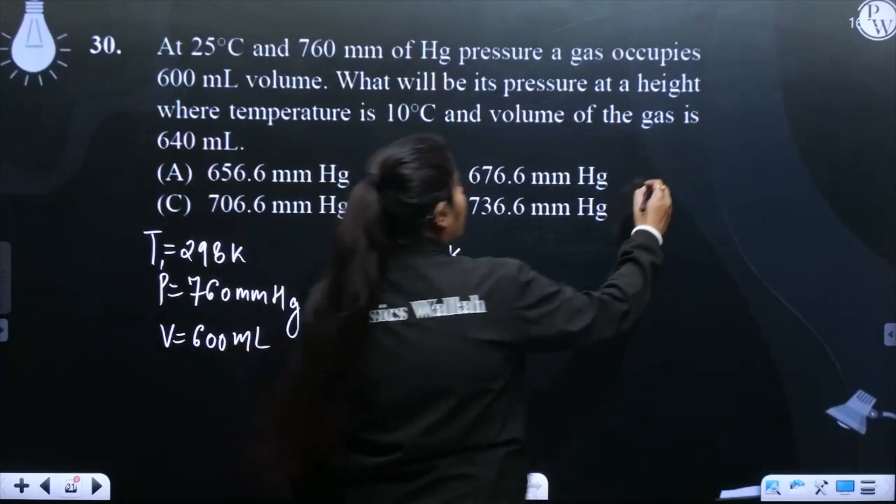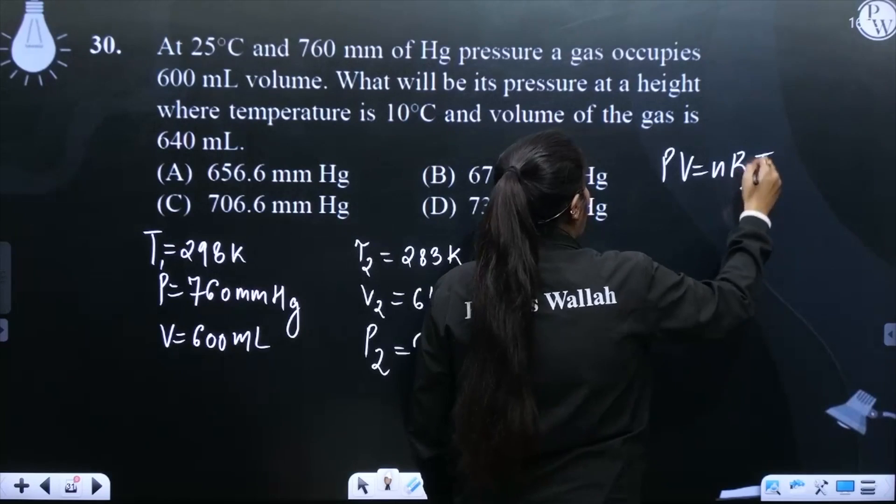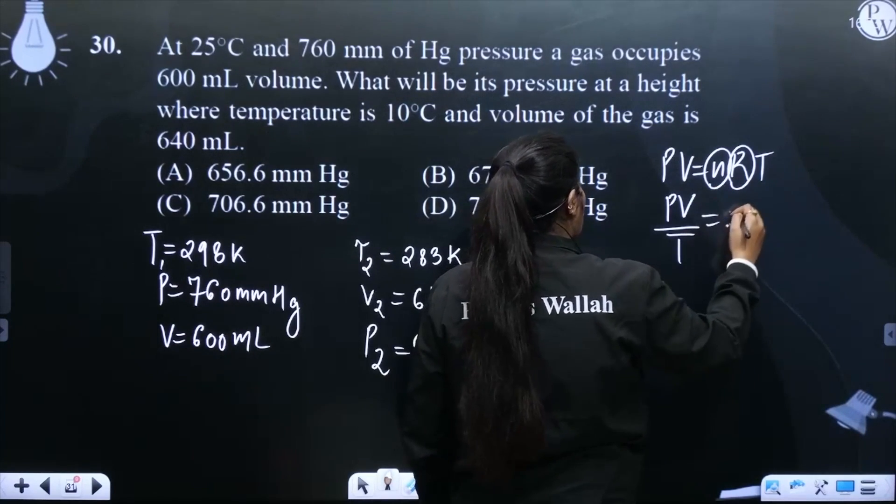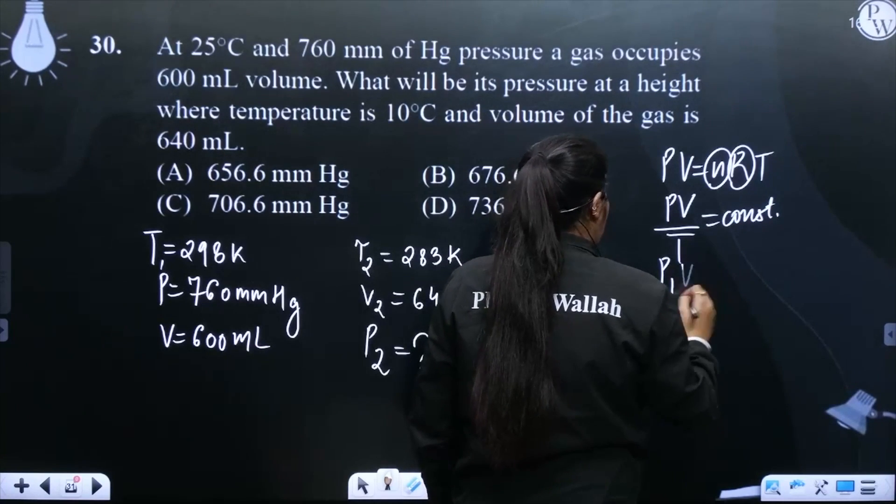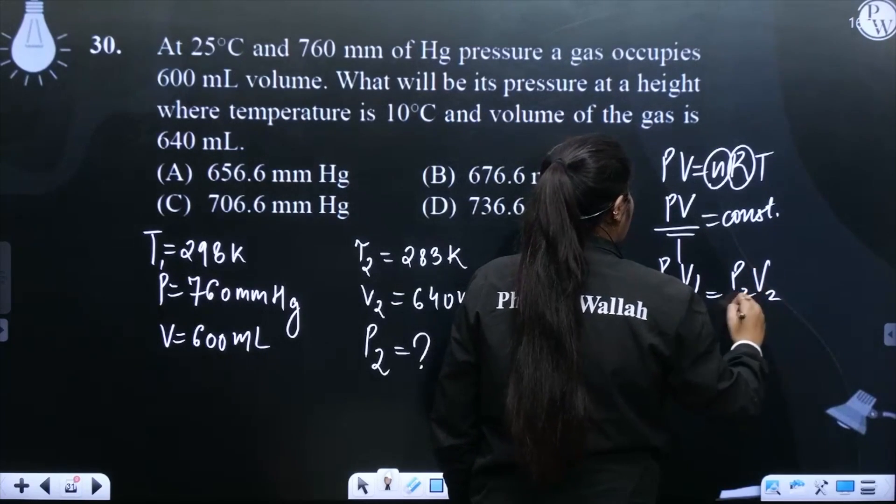So again, we know that PV is equals to nRT. R is constant, moles are constant. That means PV upon T is constant. So we can write P1 V1 upon T1 is equals to P2 V2 upon T2.